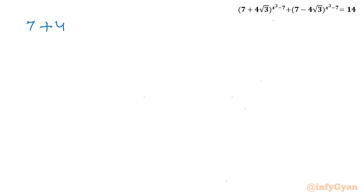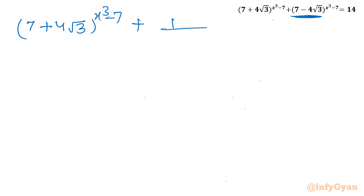So the equation becomes: (7 + 4√3)^(x³ - 7) plus, in this place I will write 1 over (7 + 4√3) whole power (x³ - 7), equals 14 on the right-hand side.